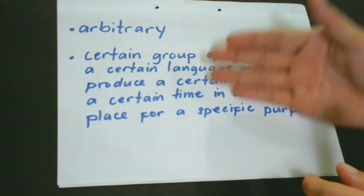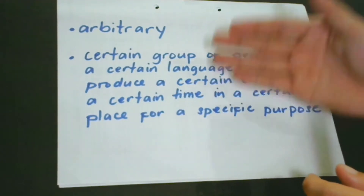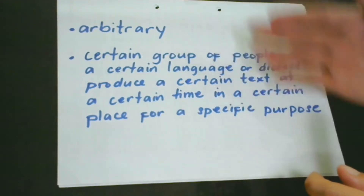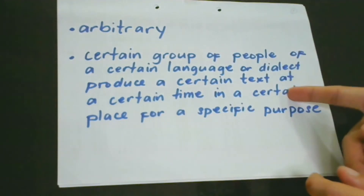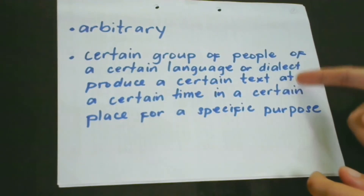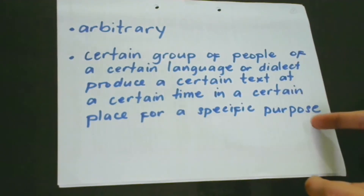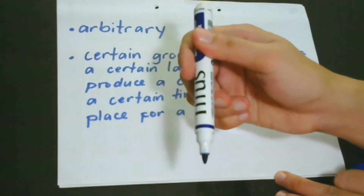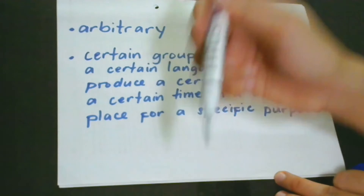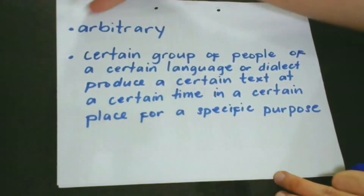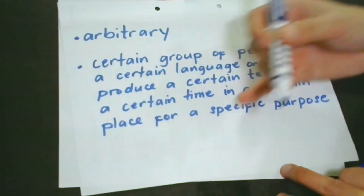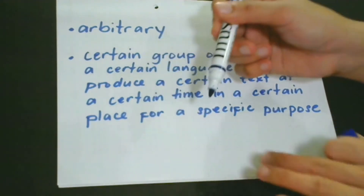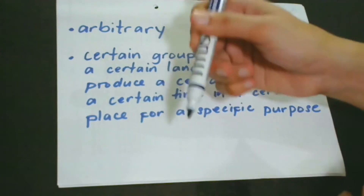This means that a certain group of people of a certain language or dialect produced a certain text at a certain time, in a certain place, for a specific purpose. For example, the marker — the very purpose of this is to leave a mark, to make a mark. These words are marks of this pen; this is the function of this thing.